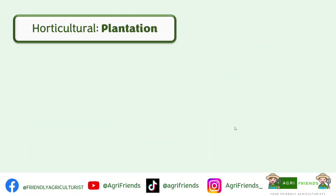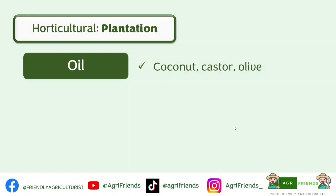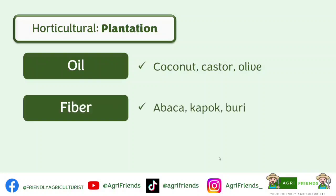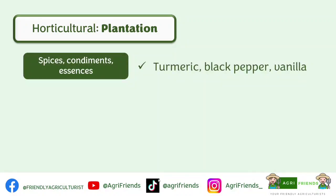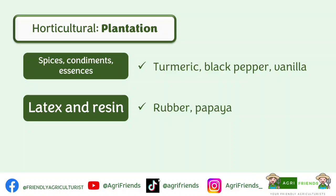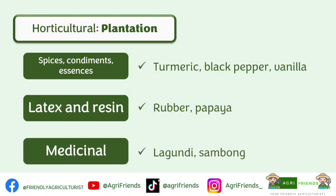The next category is plantation crops. Oil crops are grown for their oil content — such as coconut, castor, and olive. Fiber crops include abaca, kapok, and buli; fiber crops can be either agronomic or horticultural depending on the manner of culture. Beverage crops are used for creating drinks — examples are cocoa, coffee, and tea. Spices, condiments, and essences are grown for their aromatic or pungent characteristics — such as turmeric, black pepper, and vanilla. Latex and resin crops produce resins or latex — such as rubber and papaya. Medicinal plants are grown for their medicinal purposes or components — such as lagundi and sambong.